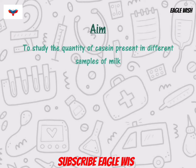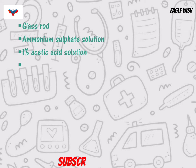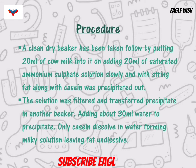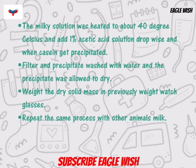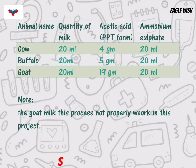After completing the theory part, write the aim of the project along with the materials required in the experiment. After this, write the procedure of the experiment, and also present it in a tabular form.